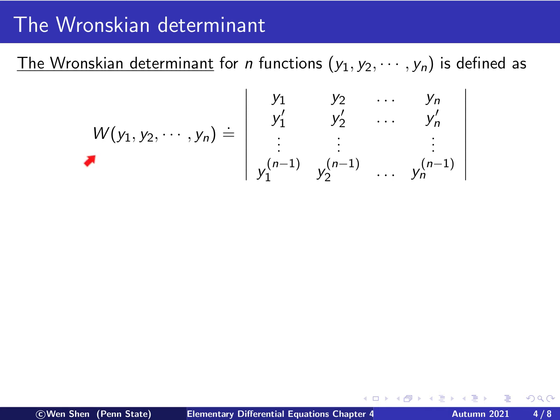The Wronskian determinant is defined as follows — the dot-equal sign means what comes after is a definition. You compute the determinant of an n×n square matrix whose entries are arranged as follows: the first row is the functions y_1, y_2, ..., y_n; the second row is the first derivatives y_1', y_2', ..., y_n'; the third row is the second derivatives; and you continue until the nth row, which is the (n-1)th derivative of all the y's. The determinant of this matrix is called the Wronskian determinant.